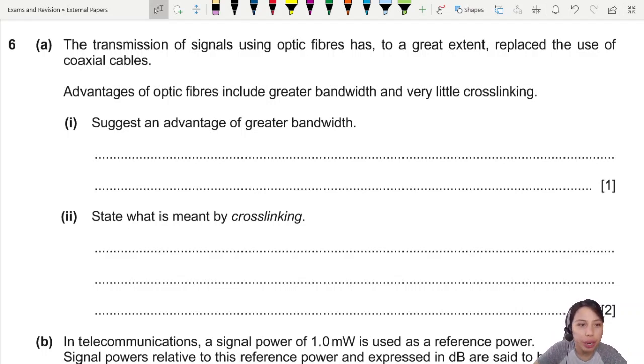This is a communication question, so let's look at it. The transmission of signals using optic fiber has, to a great extent, replaced coaxial cables. This is one of the latest cables, optic fiber. Why do we use optic fiber? The advantages are greater bandwidth and very little crosslinking.